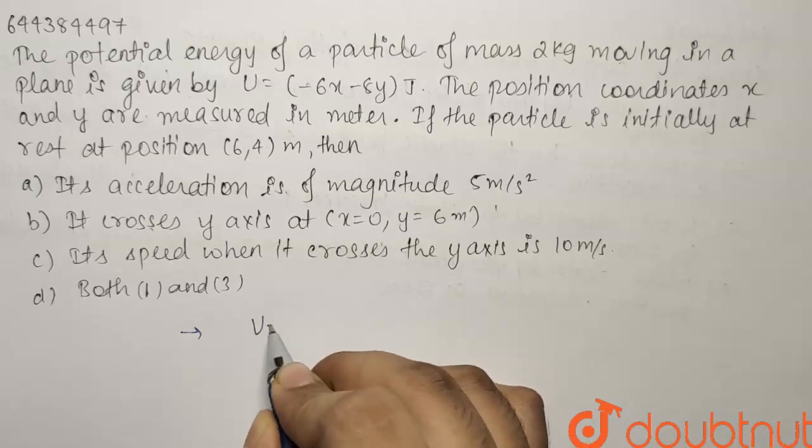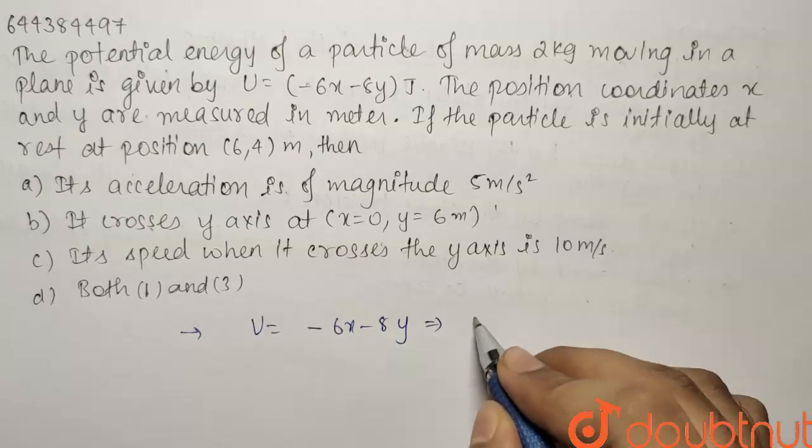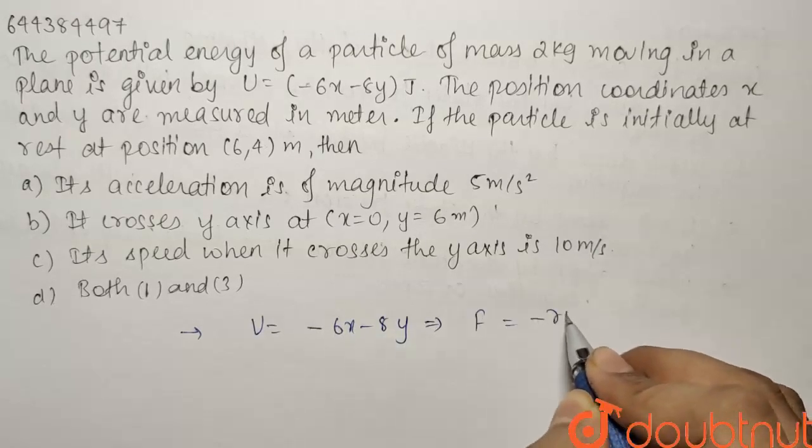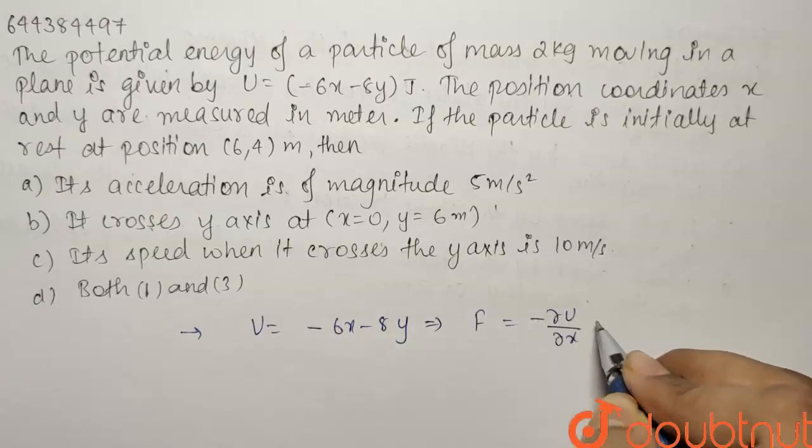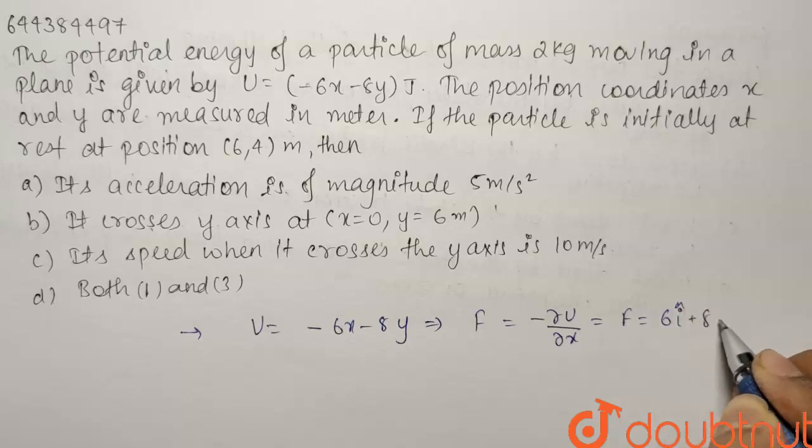So first things first, potential energy is given by minus 6x minus 8y. So what we will do, let us find out the force by using minus dU by dr. So what you get, our force comes out to be equals to 6i cap plus 8j cap. So now as we have found out the force.